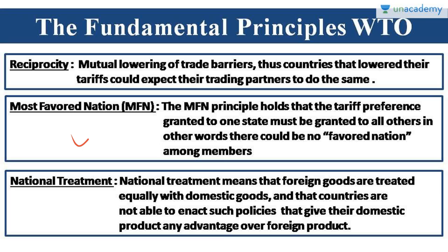The MFN principle holds that the tariff preference granted to one state must be granted to all others. There can be no favored nation among members. For example, if India grants MFN status to Germany and specifies how much tax it will impose on goods from Germany, India must impose the same level of tax on all other countries of the world. You cannot discriminate among countries — that is called MFN status.